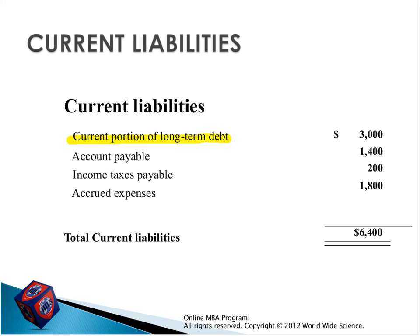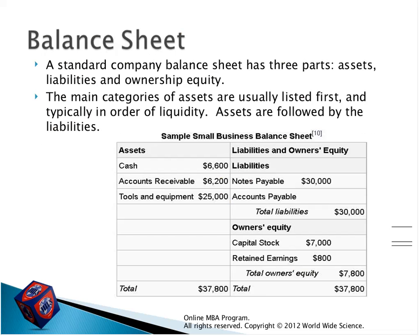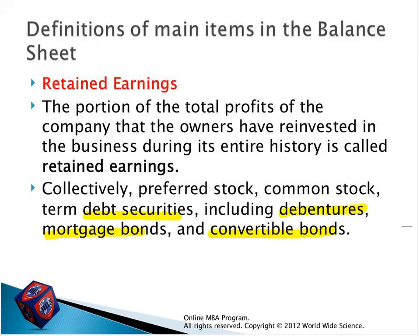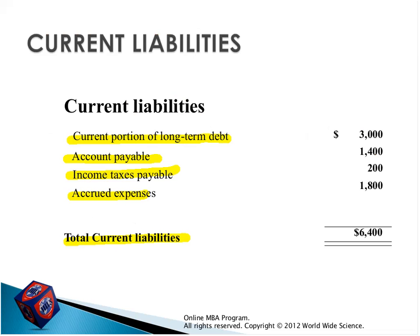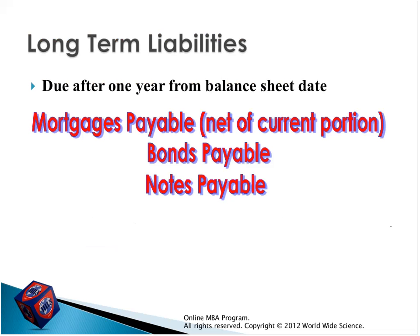Here are examples showing how current liabilities appear in the balance sheet: current portion of long-term debts, accounts payable, income tax payable, and accrued expenses, with the total being current liabilities. For long-term liabilities we have mortgage payable — net of current portion — and bonds payable, which means we have taken some credit and haven't paid yet.